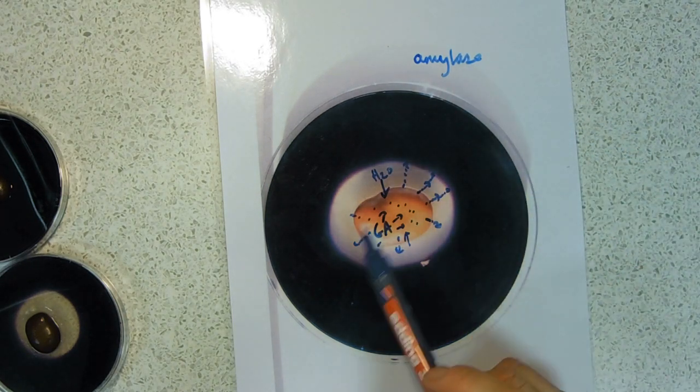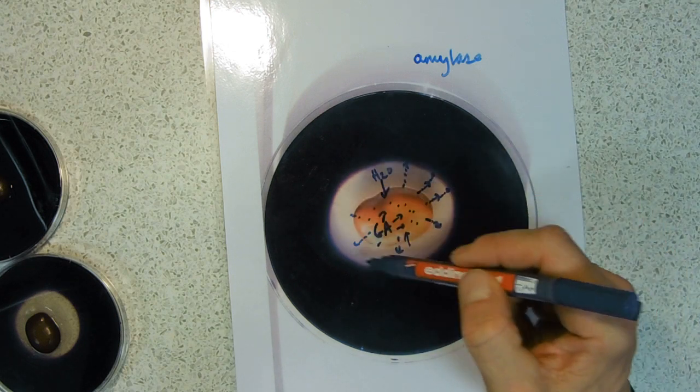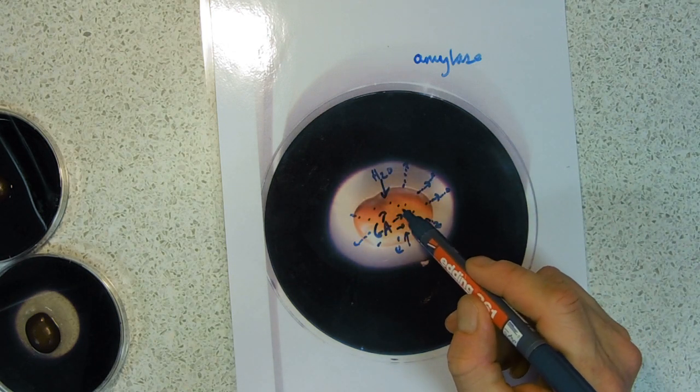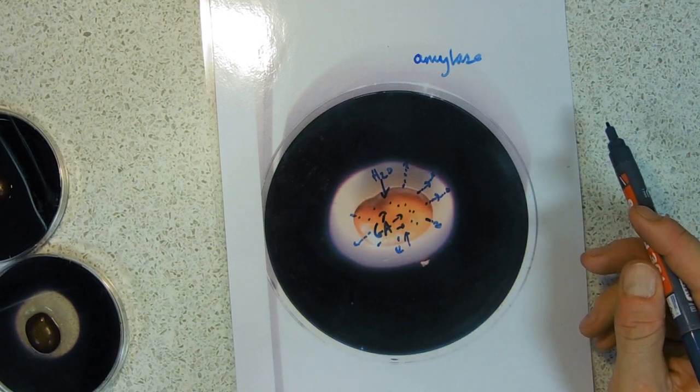This is showing us that this seed is producing amylase. It's very hard to show inside the seed itself, but we can show it diffusing out into this agar.